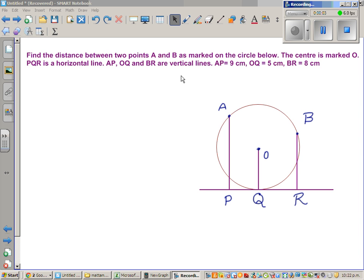Find the distance between point A and B as marked on the circle below. This is a circle, the center is marked O, so O is the center and A and B are two points on the circle. You want to find the distance between A and B. PQR is a horizontal line, AP, OQ and BR are vertical lines.